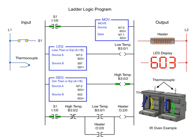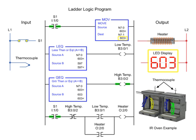To control the circuit, S1 is programmed in the heater output circuit. Addressed to the move instructions is a thermocouple that provides an analog value of the temperature. The temperature is moved from the source to the destination when S1 is activated and is displayed on the LED panel.